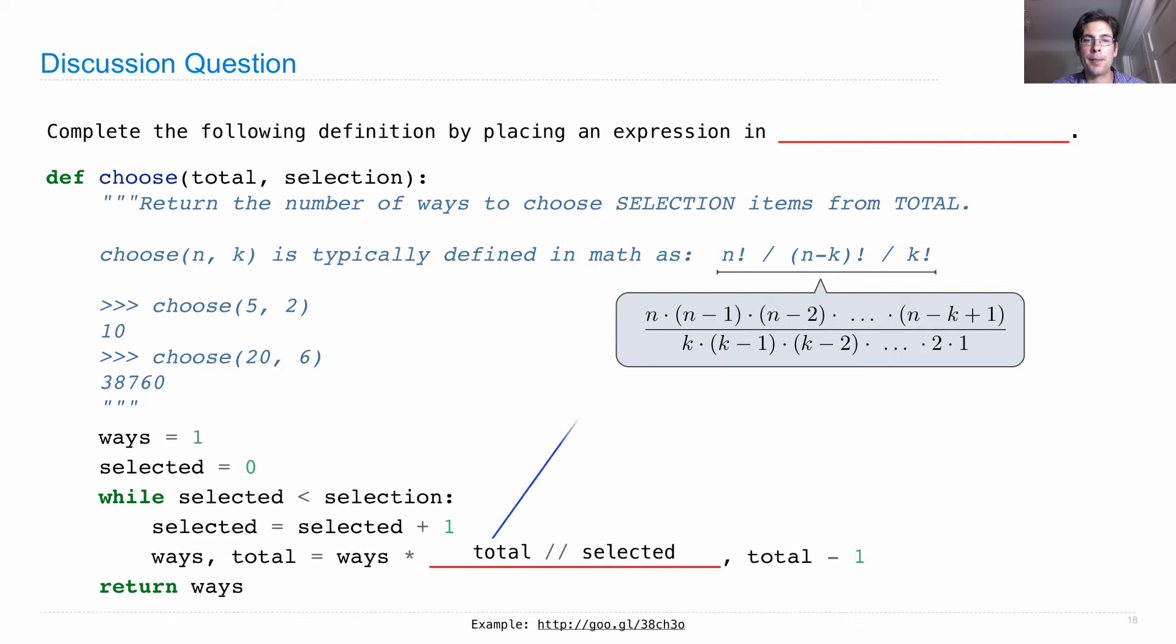So what's going on here? Well, every time you multiply in total, you're multiplying in one of the terms of the numerator, and when you divide out selected, you're dividing out one of the terms in the denominator.